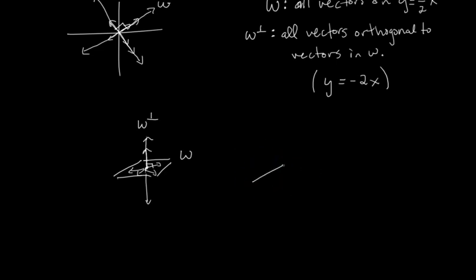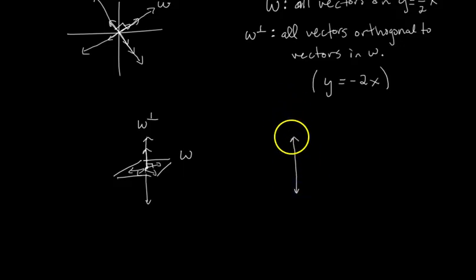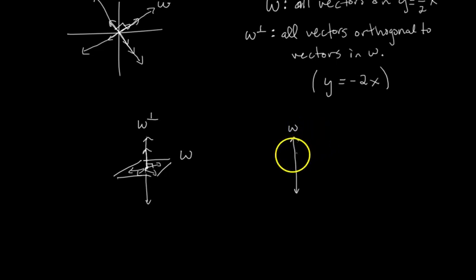Interestingly, if you switch it up and call the line going straight up and down in three-dimensional space W, then W perp would be the plane that it pierces at a right angle. So that plane would be W perp.